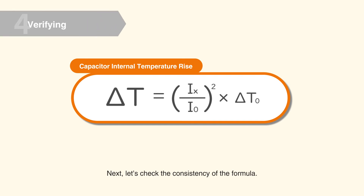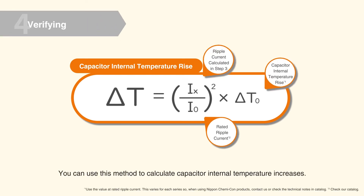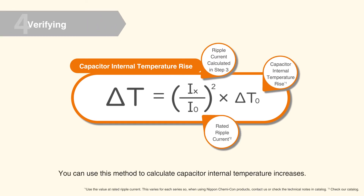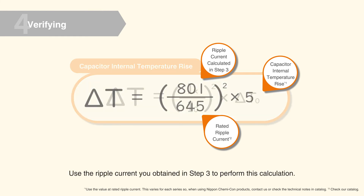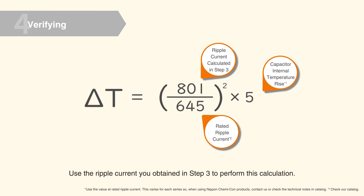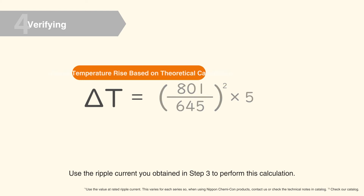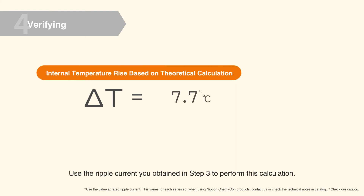Next, let's check the consistency of the formula. You can use this method to calculate capacitor internal temperature increases. Use the ripple current you obtained in step 3 to perform this calculation.